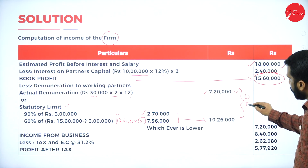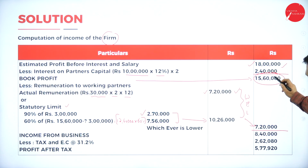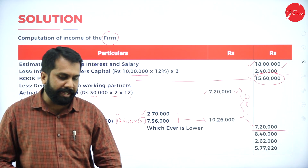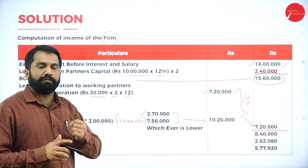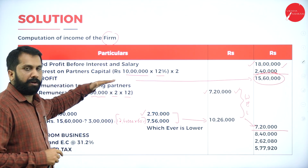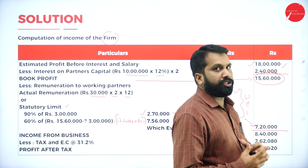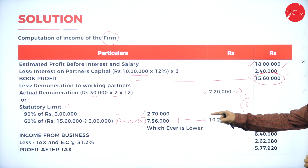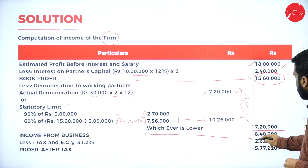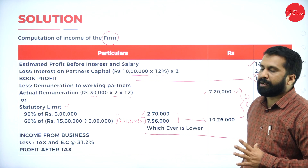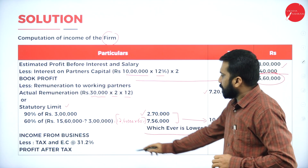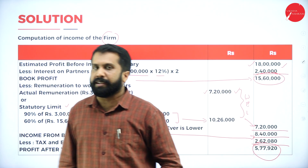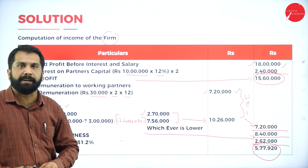Taking 15 lakh 60,000 minus 7 lakh 20,000 gives business income of 8 lakh 40,000. To summarize: net profit minus interest on capital gives book profit; book profit minus the lesser of actual or standard remuneration gives business income. Tax at 31.2% gives approximately 2 lakh 62,000, leaving profit after tax of 5 lakh 77,920.